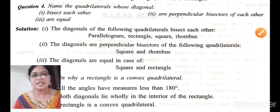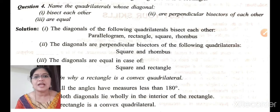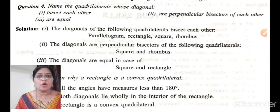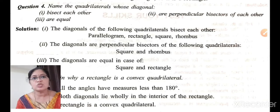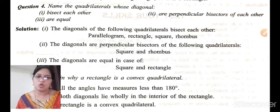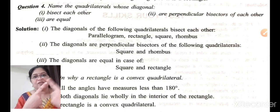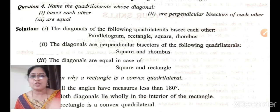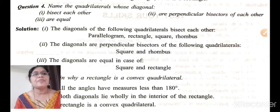Question number four: name the quadrilateral whose diagonals bisect each other. We discussed this in the fifth module. The diagonals of the following quadrilaterals bisect each other — that is, the diagonal is divided into two equal parts: parallelogram, rectangle, square, and rhombus.